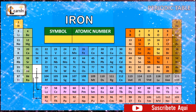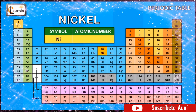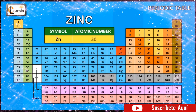The element iron is represented as Fe and has an atomic number of 26. The element cobalt is represented as Co and has an atomic number of 27. The element nickel is represented as Ni and has an atomic number of 28. The element copper is represented as Cu and has an atomic number of 29. The element zinc is represented as Zn and has an atomic number of 30.